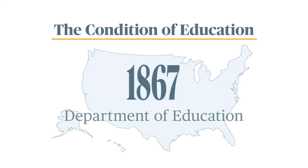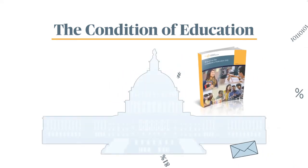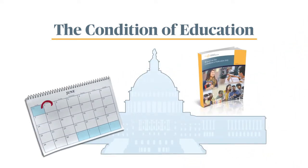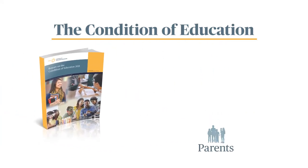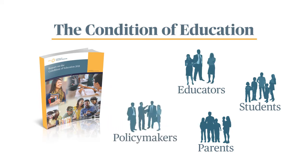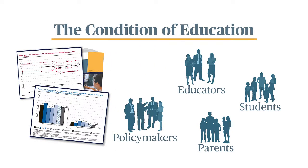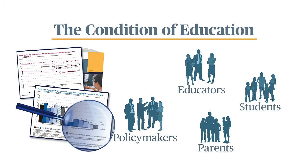Then, in 1975, Congress required that the data be compiled and presented each year by June 1st. The Condition of Education is a tool for parents, students, educators, and policymakers to see how our nation is doing, where we've improved, and what still needs to be done.